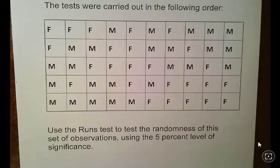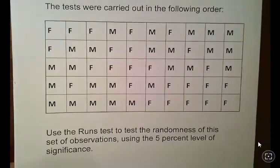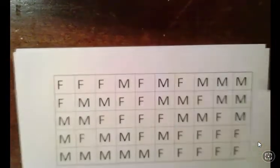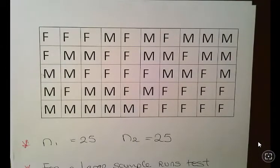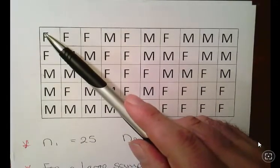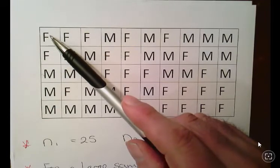Use the RUNS test to test the randomness of this set of observations given a 5% significance level. So let's start into that. So here is the raw data there. And what we are going to do is count out all of the RUNS.